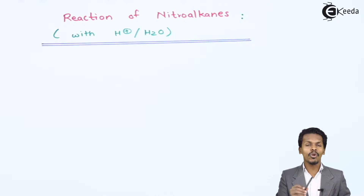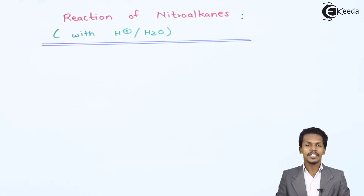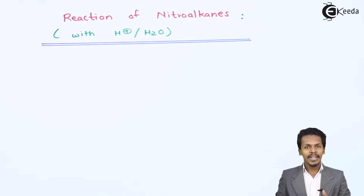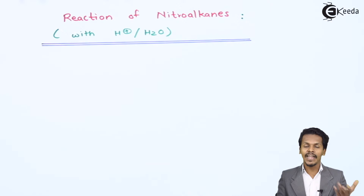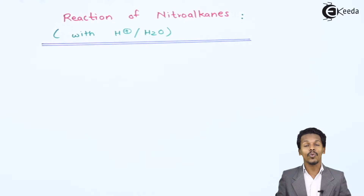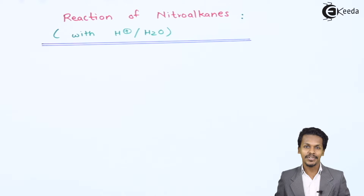In this topic we are going to talk about the hydrolysis of nitroalkane. By using this reagent or solvent we can do hydrolysis of nitroalkane. Nitroalkanes are basically divided into three types: primary, secondary, and tertiary nitroalkane. They have different reactions with respect to the hydrolysis process. So let us understand what happens when primary nitroalkane undergoes hydrolysis.